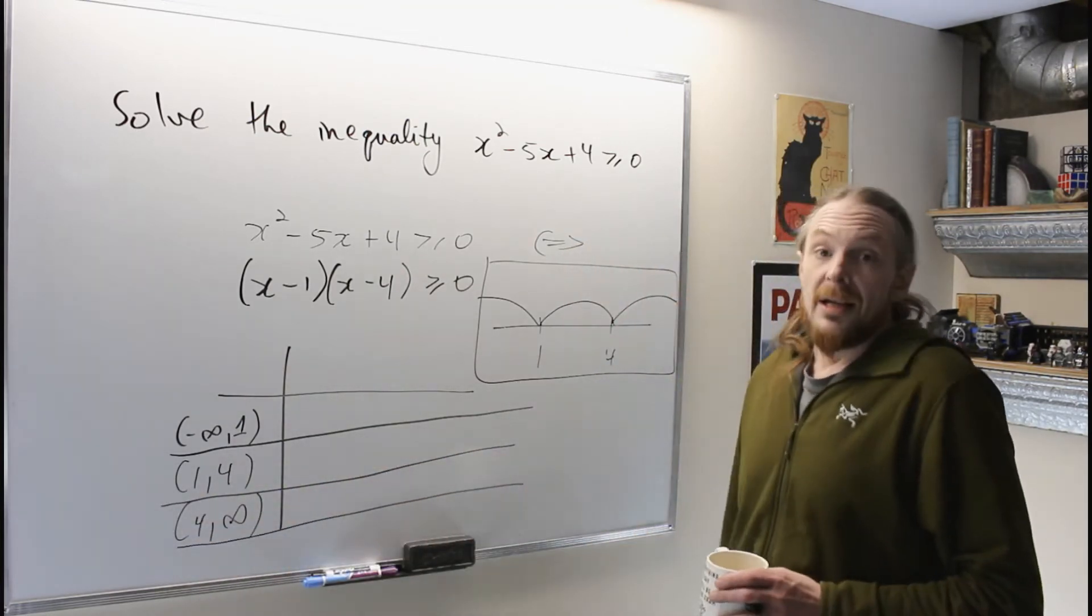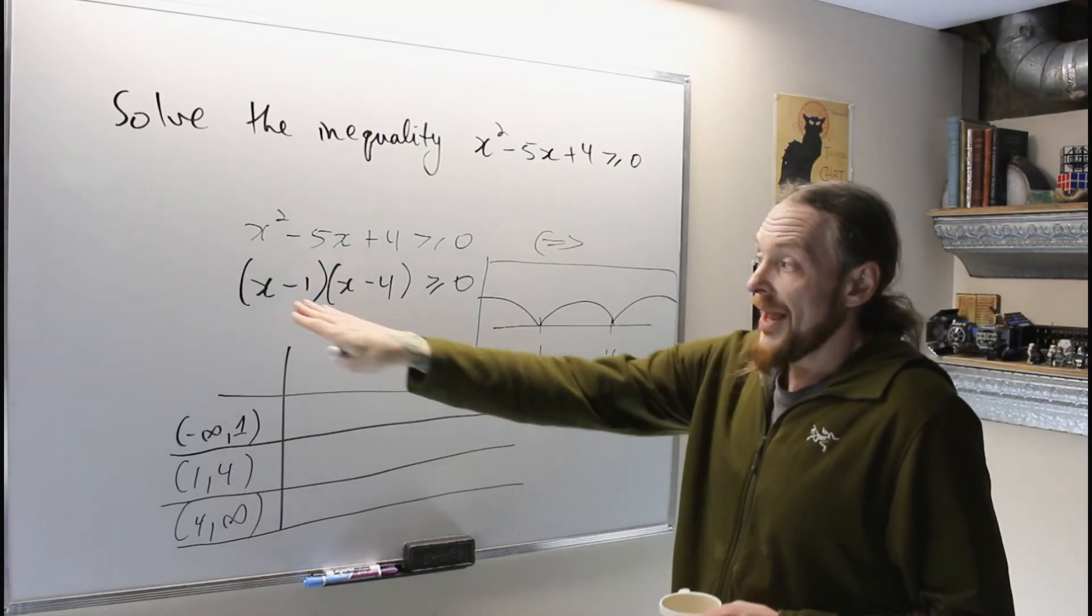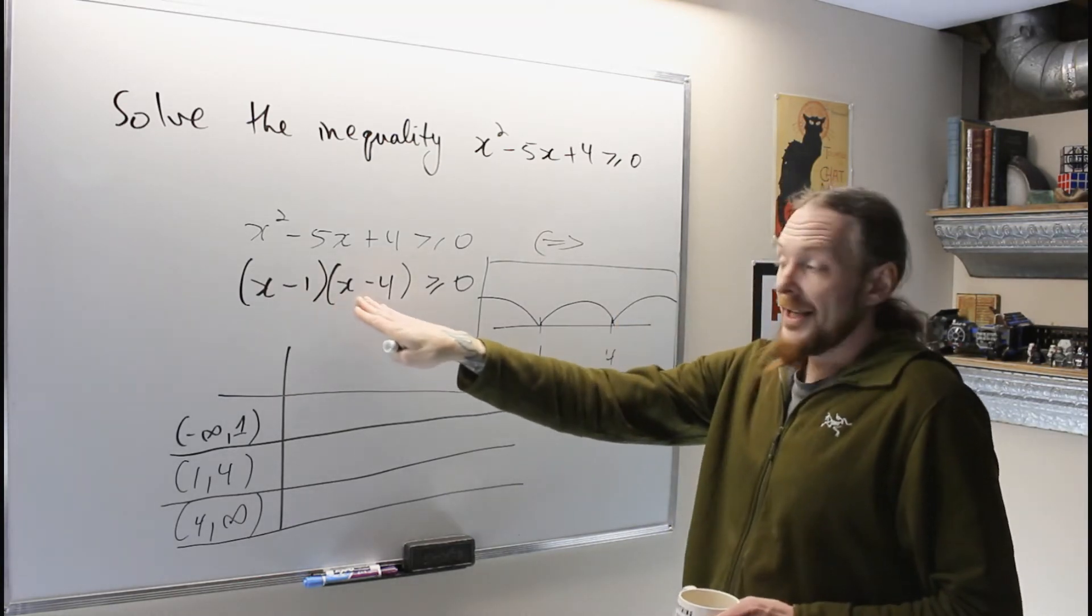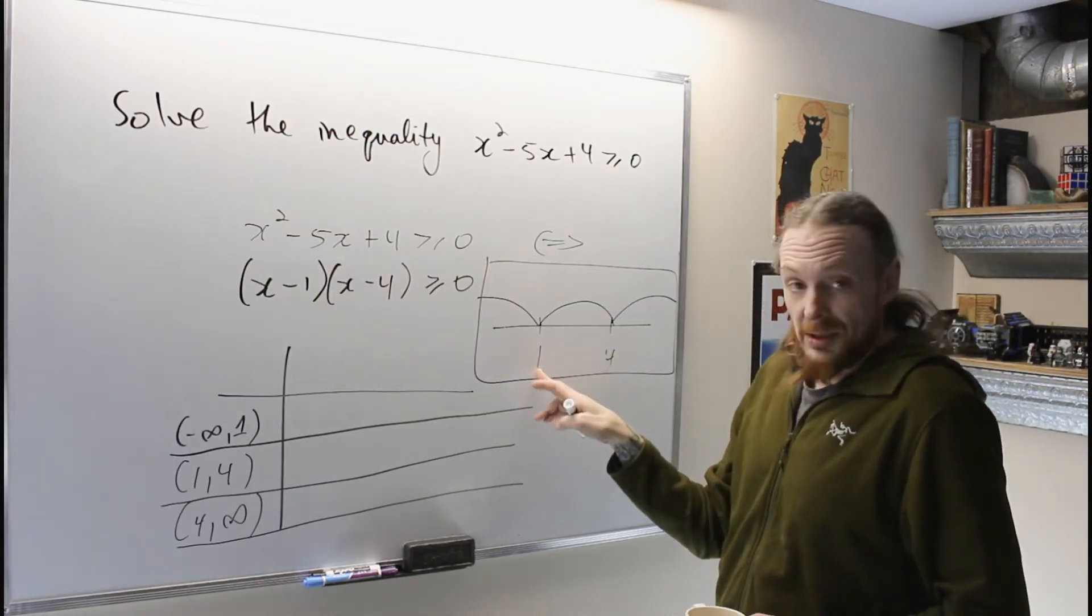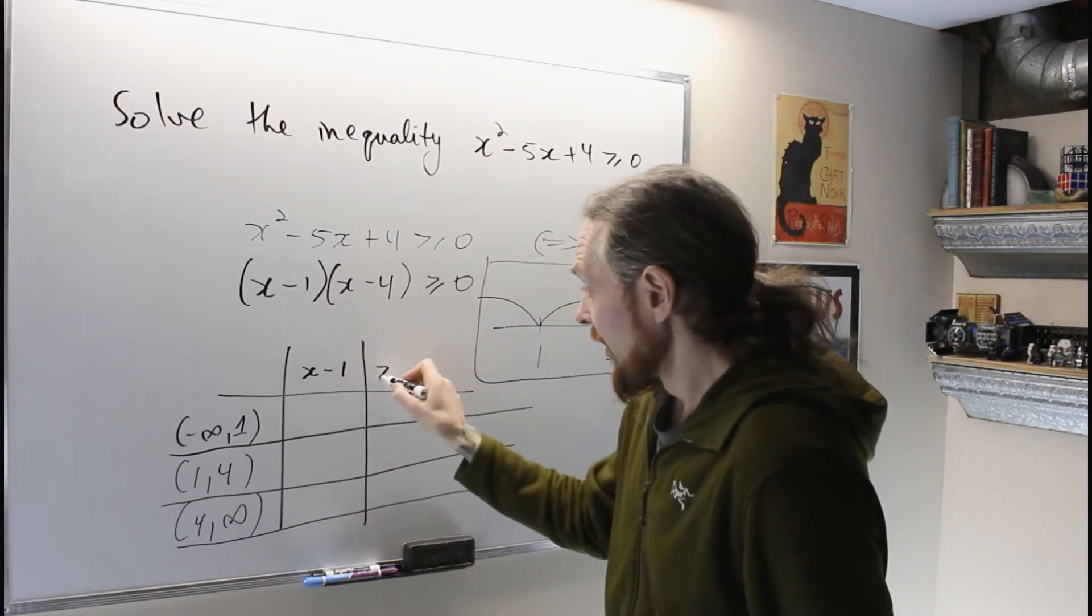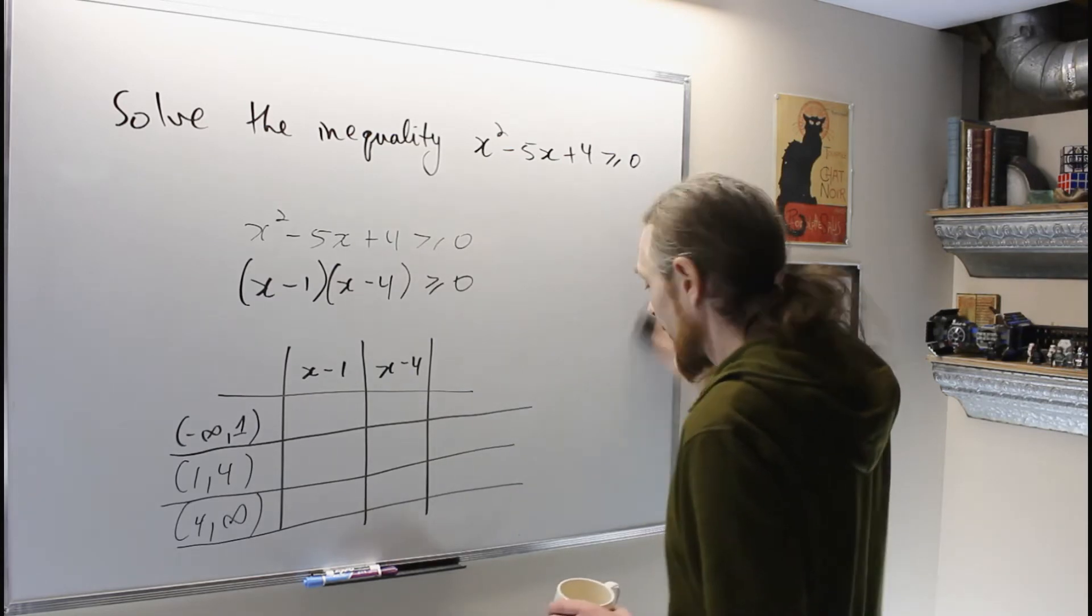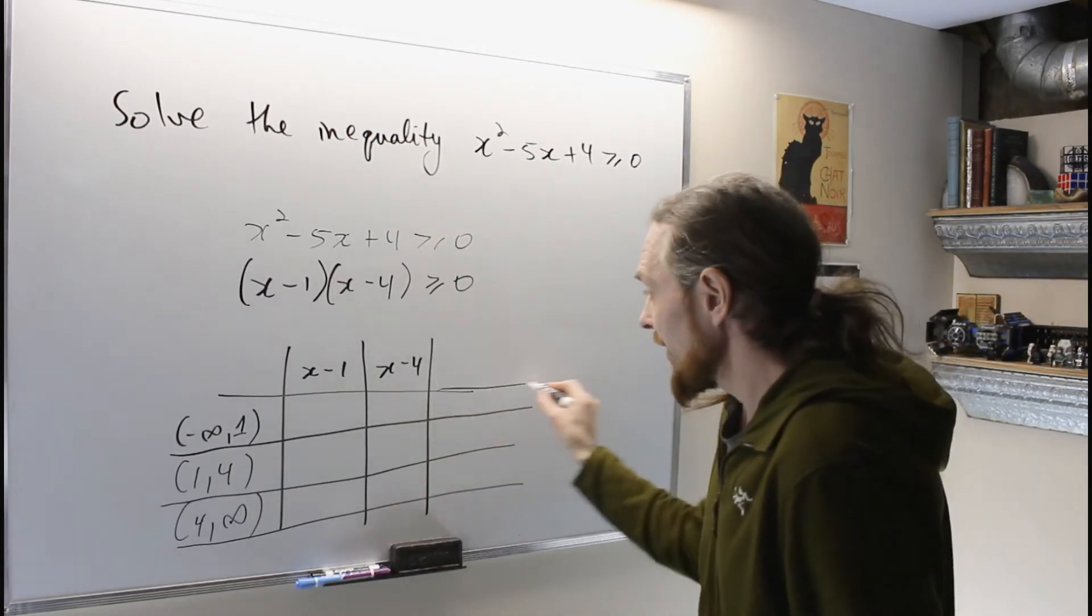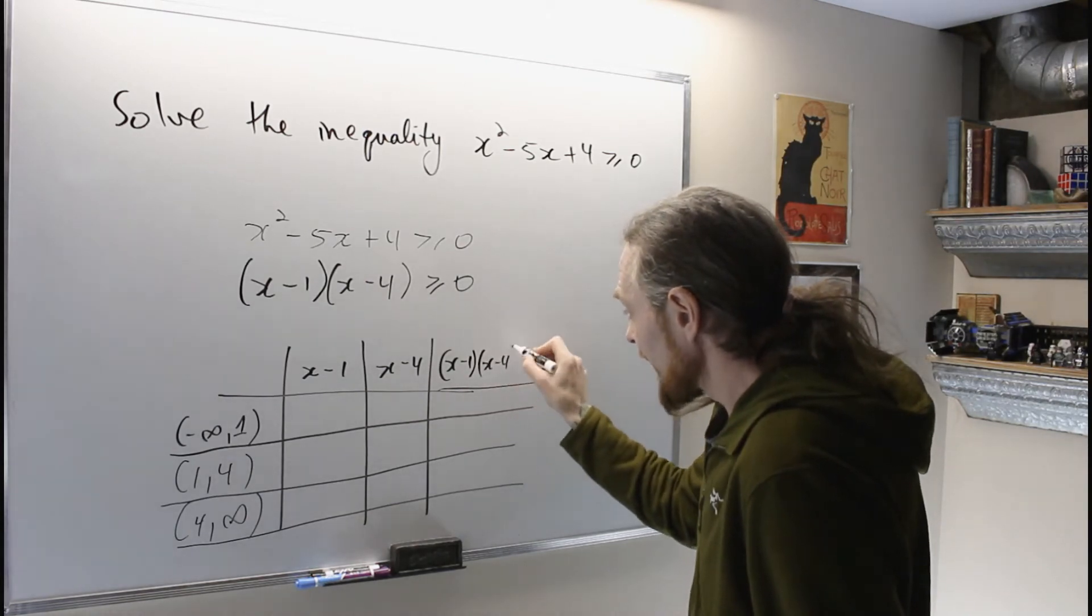Then what I'm going to do is, so that I can systematically do this on exams and stuff like that for my brain, I systematically look at this and I want the lowest root and then the next root. So 1 was the lowest root and 4. So then I'm going to list these as these terms, the lowest root to the highest root. There was only two in this case.